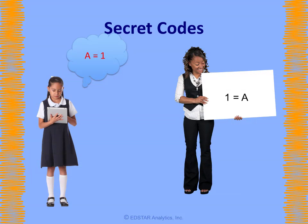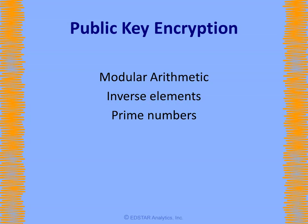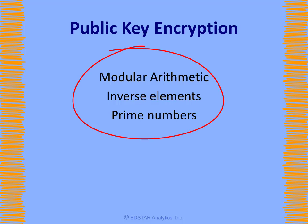Before the number theory experts got involved with encryption, both a sender and receiver of an encrypted message would have the same key. In public key encryption, the person sending the secret coded message can use one key to encode the message, and then the receiver can use a different key to decode the message.